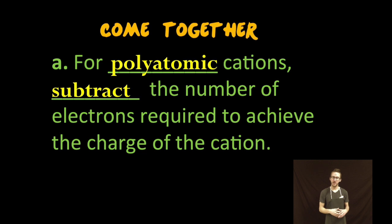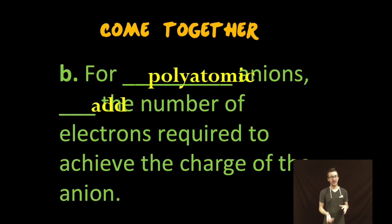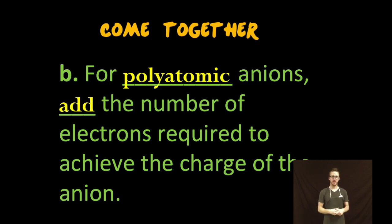As a quick couple of subnotes here, keep in mind when you're working with polyatomic cations, you will subtract the number of electrons required to achieve the charge of the cation, and for polyatomic anions, you're going to add the number of electrons required to achieve the charge of the anion. Now we'll talk about that and practice that in class.